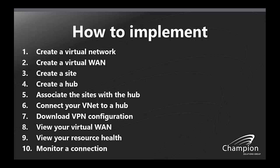You might be wondering how to implement this — and it's actually not that hard. When building out your environment, the initial focus should be on network and security, and there are a number of considerations around that. But as far as building the WAN: create your virtual network, create the WAN, create a site, create the hub, associate the sites with the hub, connect your VNet to the hub, and then download your VPN configurations — which is actually a single download after you build out your environment.